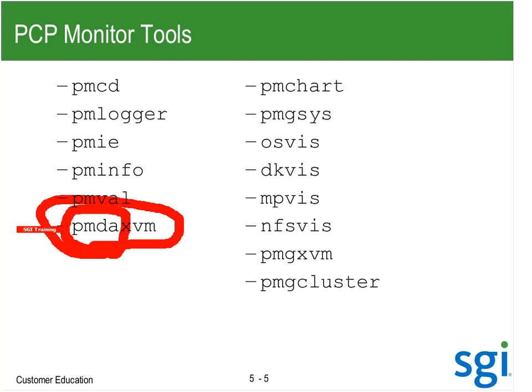I was just trying to demonstrate some different performance metric domain agents — there are ones for InfiniBand as well. To look at the data, I've been using PMChart quite a bit. There's going to be a dedicated lab for you to reconstruct a set of charts like I've done, in particular to build that memory map.